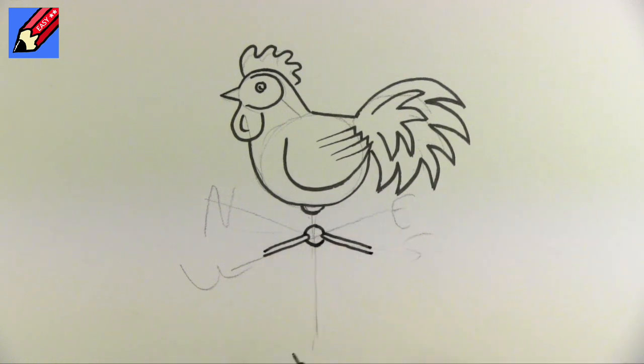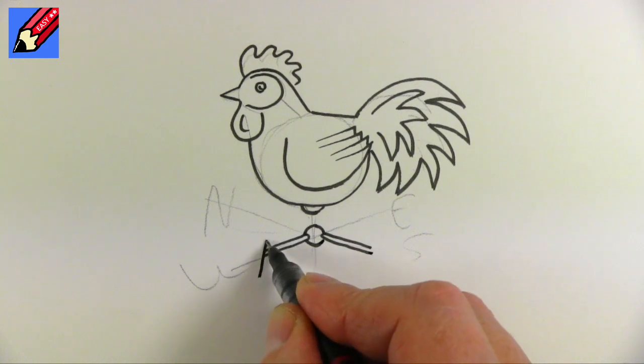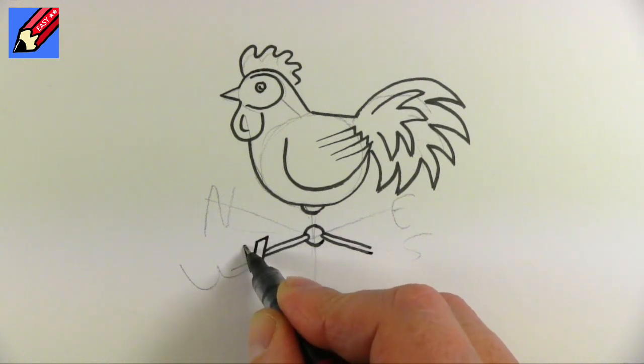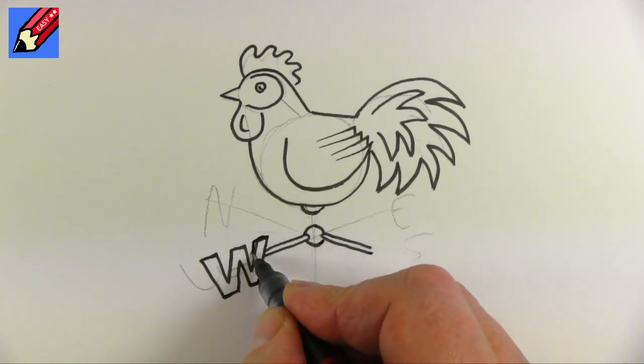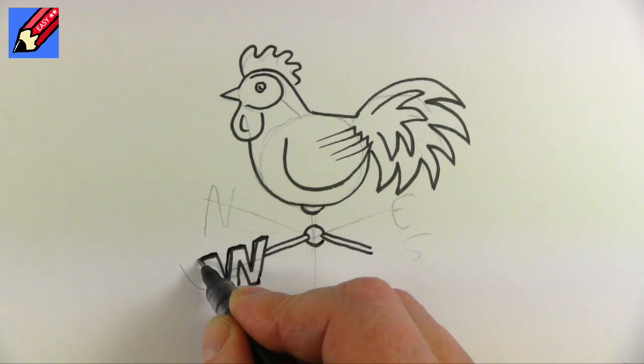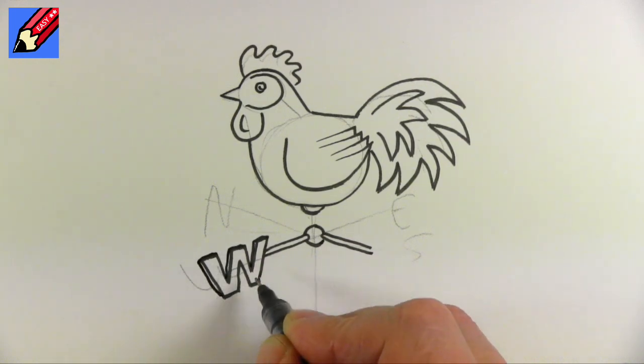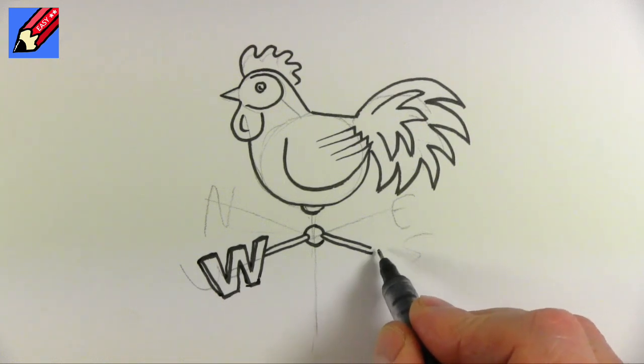And then here we'll be able to draw W like that, and that probably wants to look a bit 3D as well, so we go across there and down, across there and then down in there and on the inside.